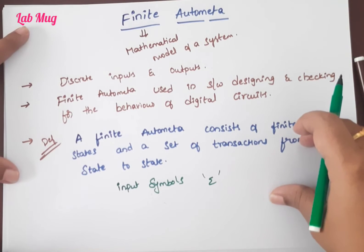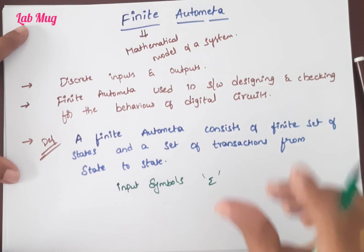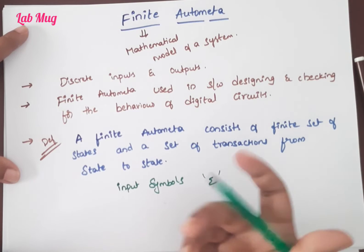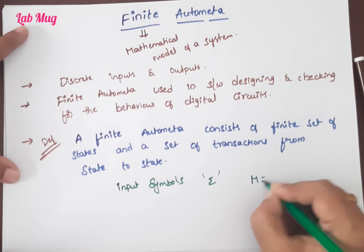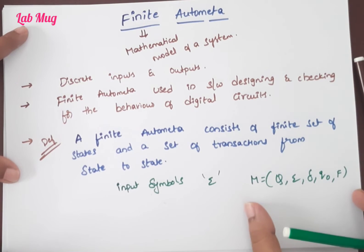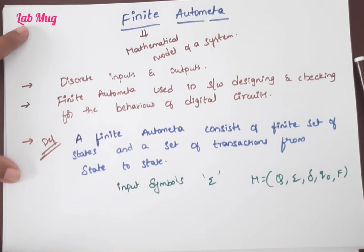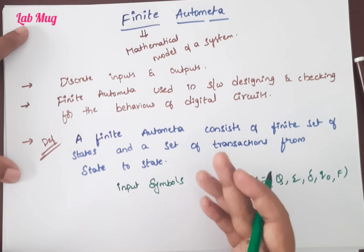Generally in finite automata, there are different tuples. What is a tuple? When we give a variable, that is nothing but a tuple. We represent it as M = (Q, Σ, δ, q₀, F). So finite automata is represented like M = (Q, Σ, δ, q₀, F). What is Q, what is delta - we'll see now.